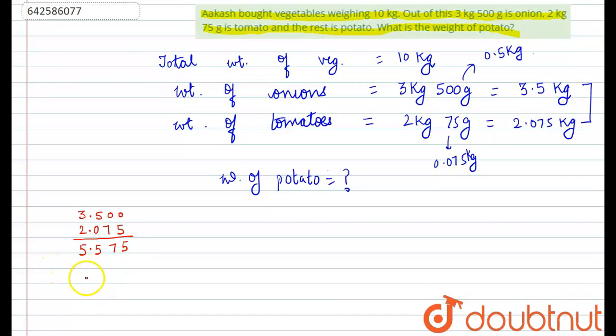So, total weight of onions and tomatoes is 5.575 kg. And the total weight of vegetables was 10, so we can write it as 10.00 kg. And we have to subtract these onion plus tomato to find out the weight of potatoes.